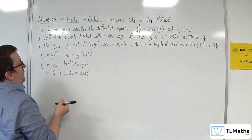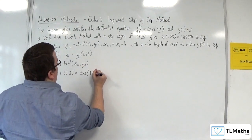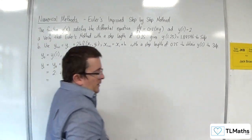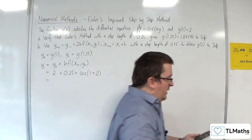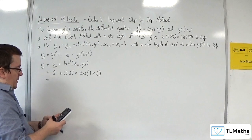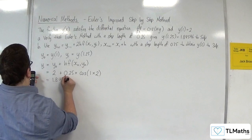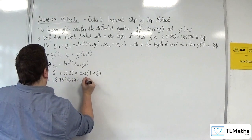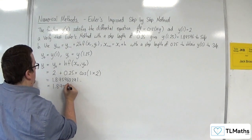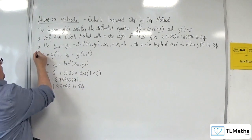So cosine of x, which is 1, or x0 which is 1, and y0 is 2. Okay, so make sure that your calculator's in radians for this. 2 plus 0.25 times cosine of 1 times 2 is 1.895963291, which is equal to 1.89596 to 5 decimal places. So that's my part A.